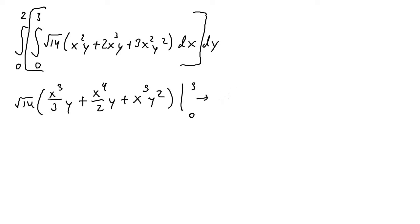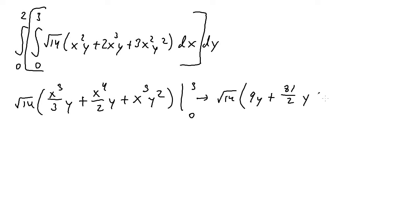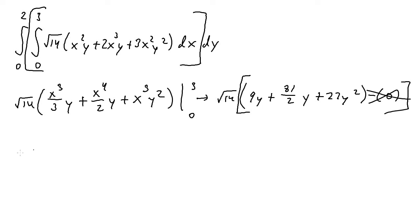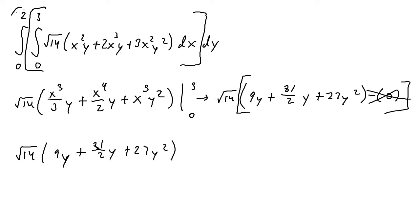Plugging in x = 3: 3³/3 = 9 times y, then 3⁴/2 = 81/2 times y, then 3³ = 27 times y². Plugging in x = 0 gives 0. So we're left with √14 times (9y + 81/2 · y + 27y²). Now evaluating the outer integral from 0 to 2 with respect to y.